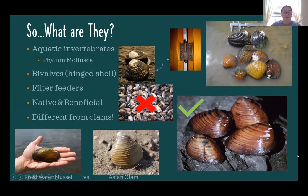Starting off with background on what these organisms actually are: they are aquatic invertebrates — animals without a backbone. They're in the phylum Mollusca, so relatives include snails, clams, and even octopi distantly. They are bivalves, meaning they have a hinged shell. They are filter feeders, and we'll dive into that — it's a main and very important process for themselves and for other organisms.